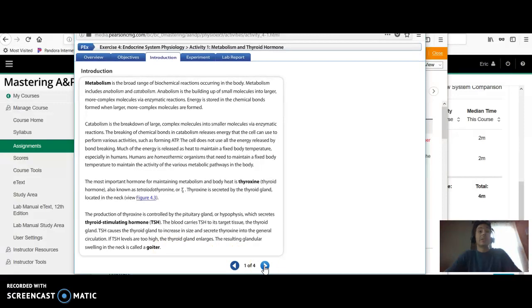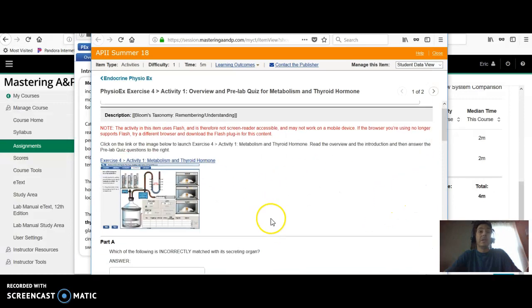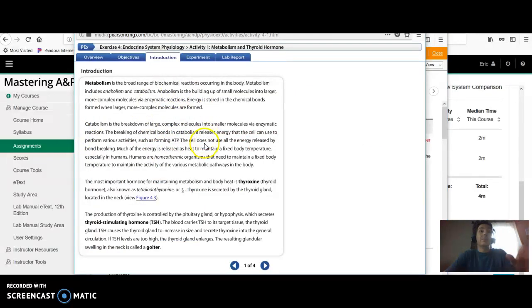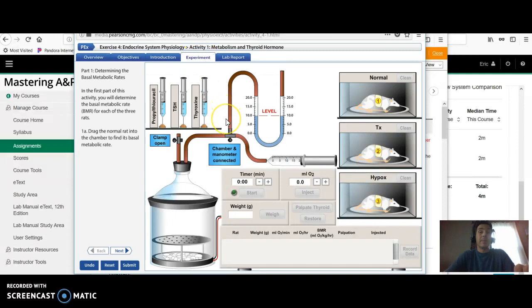Once you feel you understand everything well enough, you can go and take the quiz. Then after you take the Pre-Lab Quiz, if you've kept the experiment window open, you can do the experiment. I'm going to take you through one round of testing a rat quickly just so that you understand how it all works.